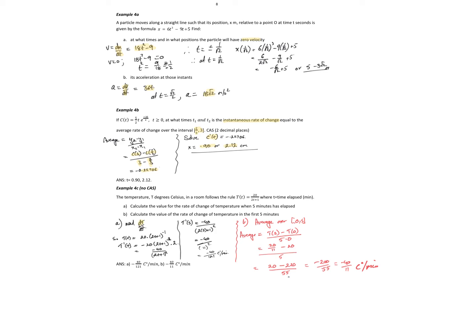So d, capital T for temperature, lowercase t for time. So t dashed of t, if I differentiate, minus 1 comes out the front, 20, 2t plus 1. Take 1 from the power. Multiply by the derivative of the inside, which is 2. I end up with negative 40 over 2t plus 1 all squared. So that's my instantaneous rate of change. I'm interested at t equal to 5, which gives me a negative 40 on 11 squared, which will give me a negative 40 on 121.